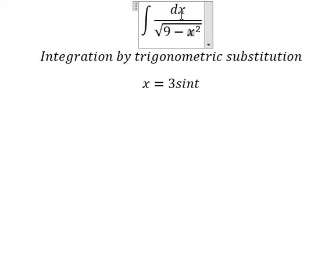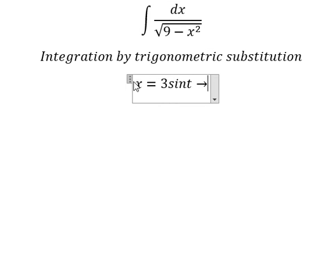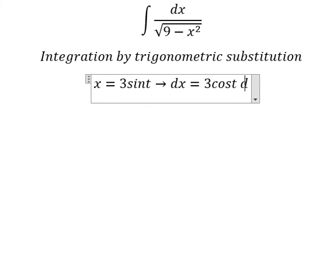And later we simplify for dx. So we do first derivative for both sides, and you get dx equal to 3 cos t dt.